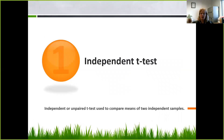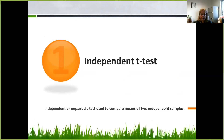Independent or unpaired t-tests are used to compare means of two independent samples. For example, if we want to look at the difference between a treatment and a control group — say we give Tylenol and ibuprofen to children with a fever — after administering each to two separate groups, we can see how those groups respond and whether they respond better to Tylenol or ibuprofen. That would be an appropriate study for the independent or unpaired t-test.